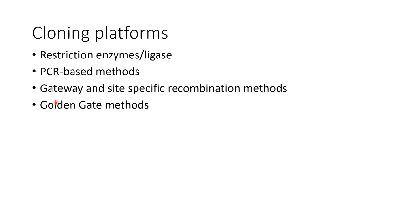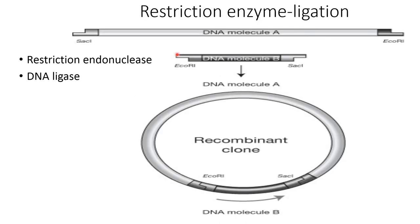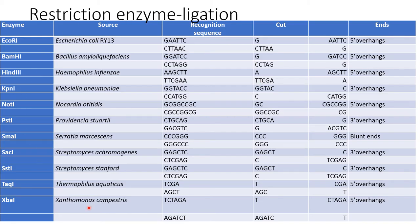Cloning platforms include: restriction enzyme and ligase method, PCR-based method, gateway and site-specific recombination method, and Golden Gate method. In the restriction enzyme ligation method, the same enzyme used to cut the vector is used to cut the gene of interest; after cutting both vector and gene of interest, the gene of interest is inserted into the plasmid with DNA ligase. A table of restriction enzymes is used in this method to create the cloning.